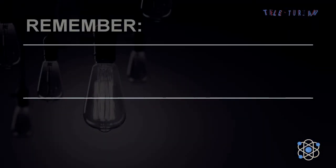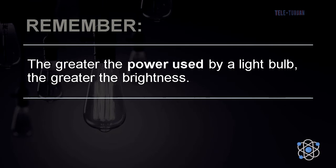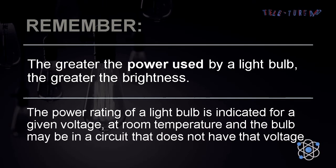Remember, the greater the power actually used by a light bulb, the greater the brightness. The power rating of a light bulb is indicated for a given voltage at room temperature and the bulb may be in a circuit that doesn't have that voltage.